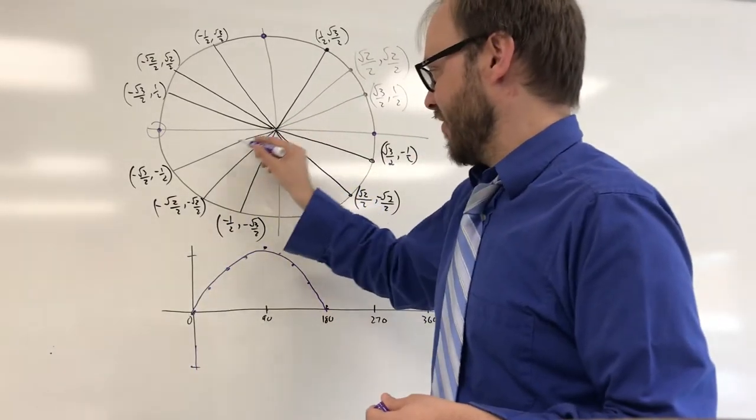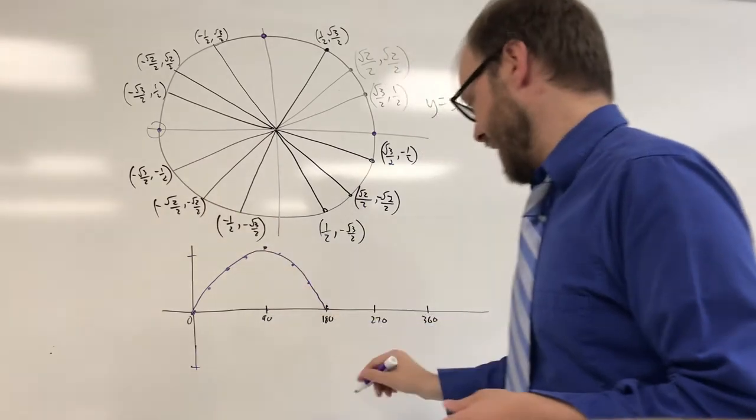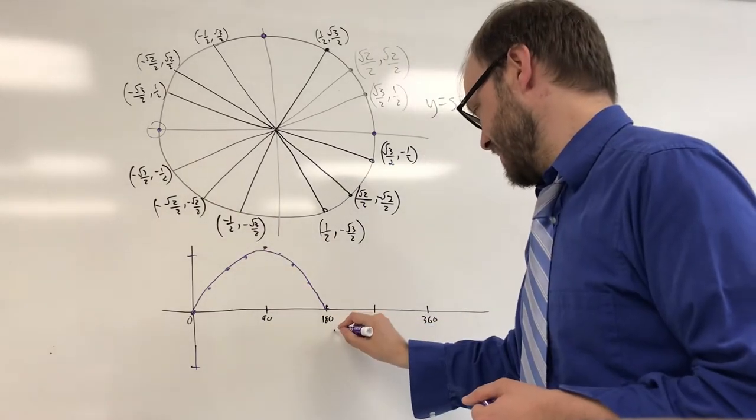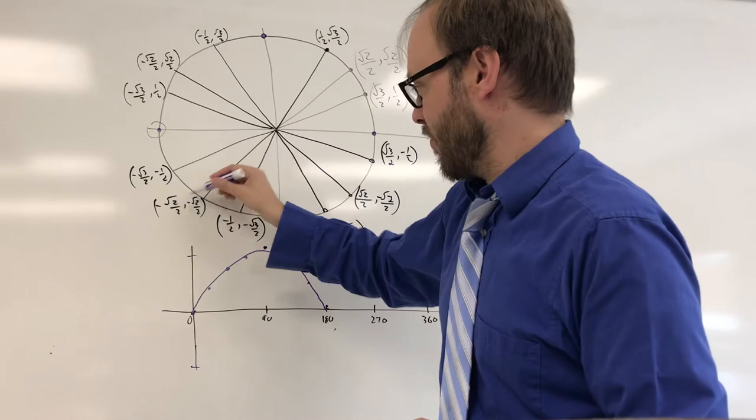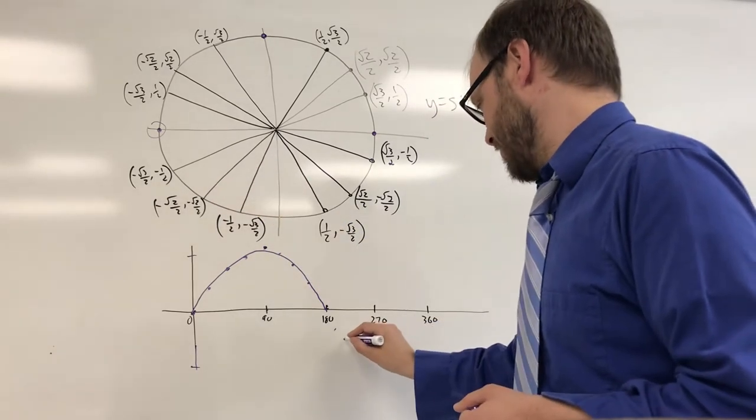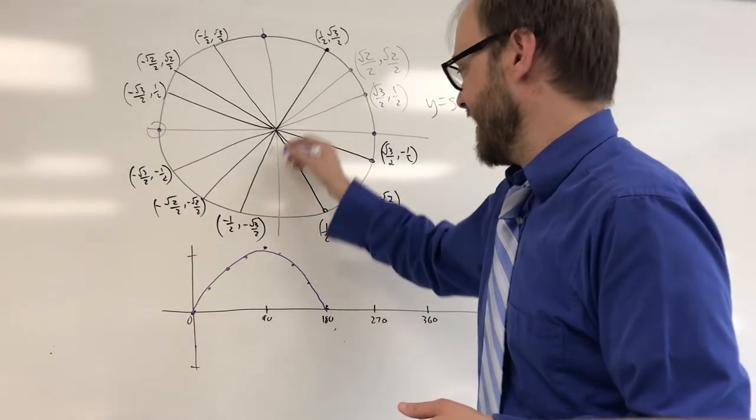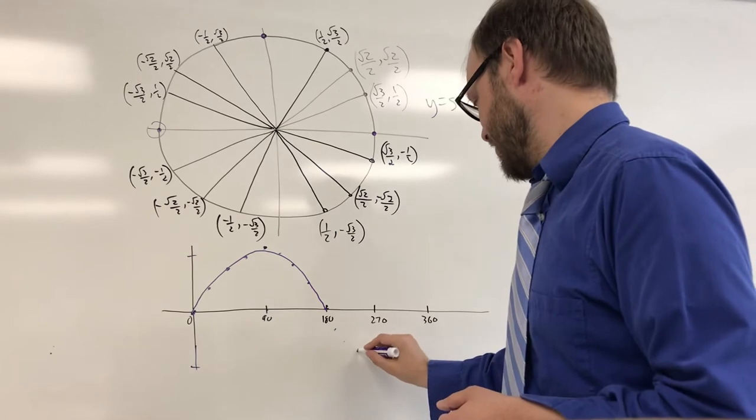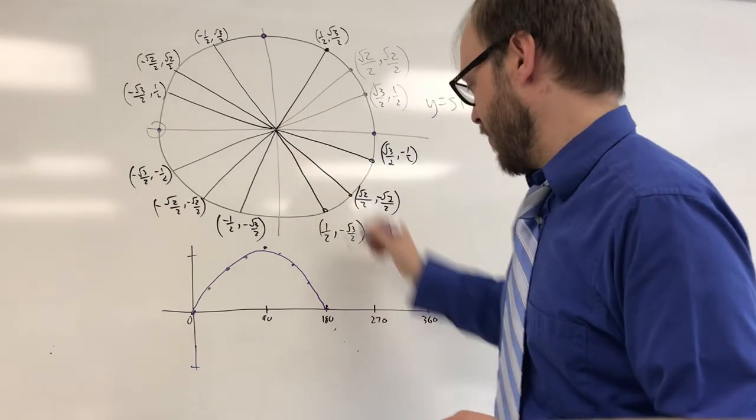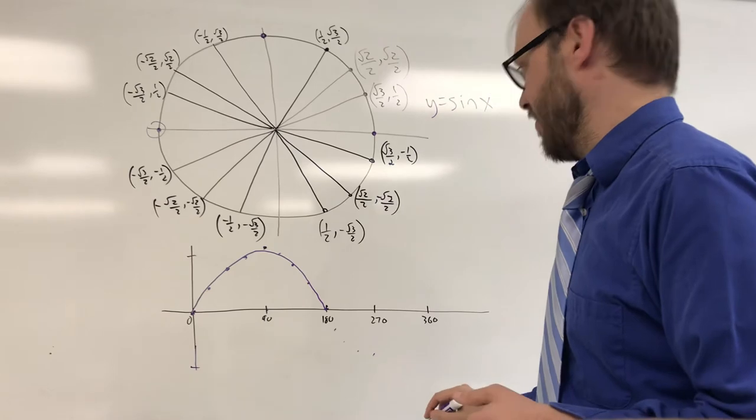So for a 210-degree angle, the y-coordinate's negative one-half, so we drop down here to negative one-half. And then the y-coordinate's negative radical 2 over 2, and then it's negative radical 3 over 2. And then we get a y-coordinate of negative 1, and we hit the bottom of the curve here.